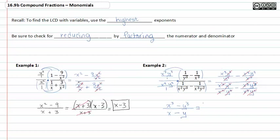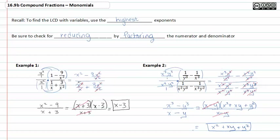The denominator doesn't factor, but the numerator is a difference of cubes, which factors to — using the pattern negative, opposite, always positive — x minus y times x squared plus xy plus y squared, all over x minus y. Which is convenient, because we can just divide out the x minus y's, and what's left in the numerator is x squared plus xy plus y squared. And that's my final answer — it's as simplified as it can be.